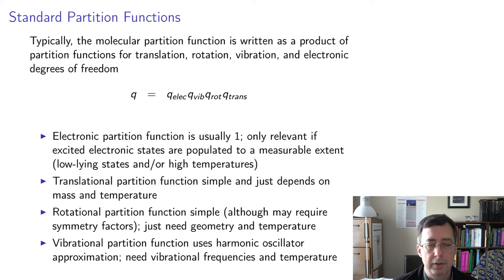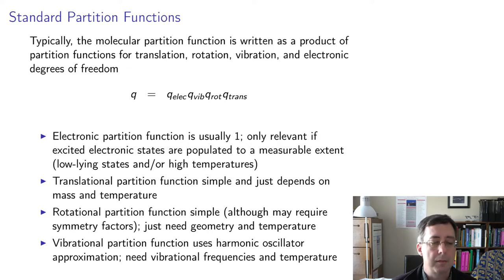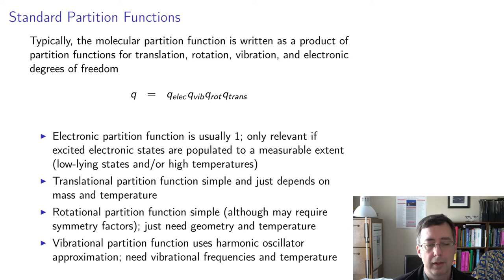The translational partition function is also very simple and only depends on the mass of the molecule and the temperature, based on a particle-in-a-box type model. The rotational partition function is based on a rigid rotor approximation. It can involve a symmetry factor telling you how symmetric the molecule is — for molecules with no symmetry we don't worry about this, but small symmetric molecules might have a factor of 2 or 4. Ultimately the entire rotational partition function just depends on the geometry, so if I have the geometry and the temperature, I can compute it.